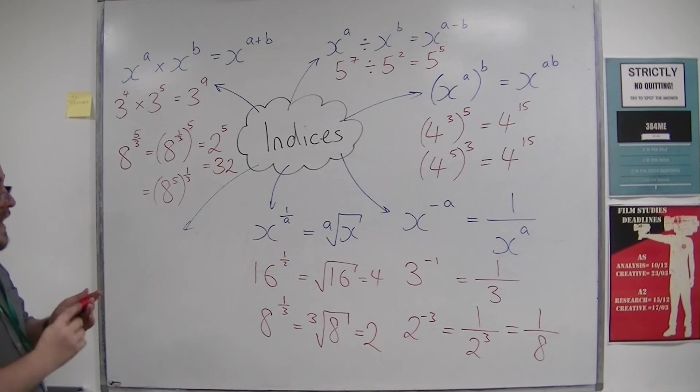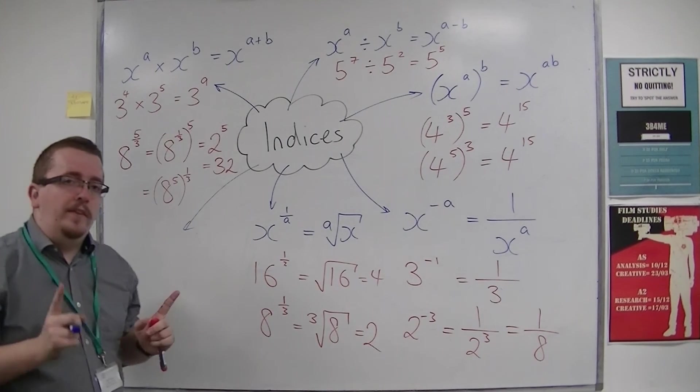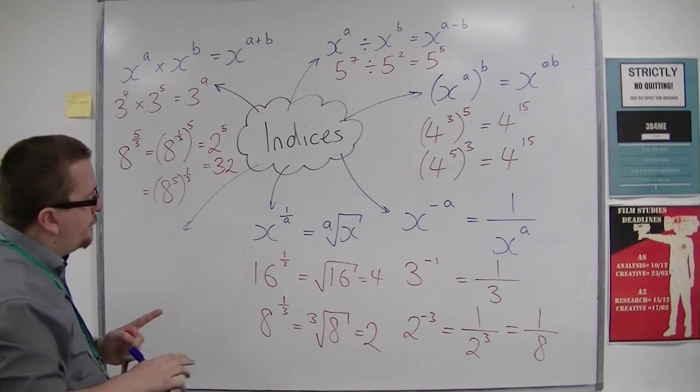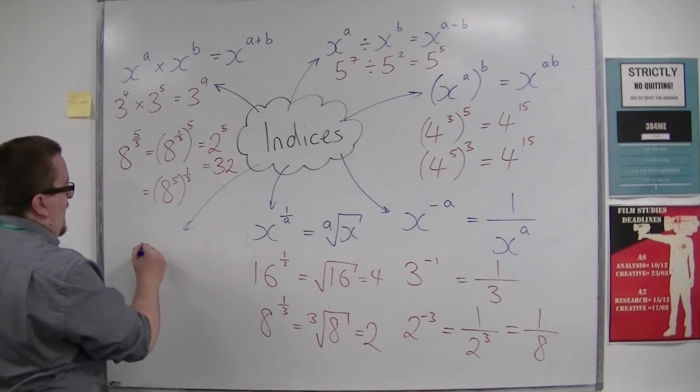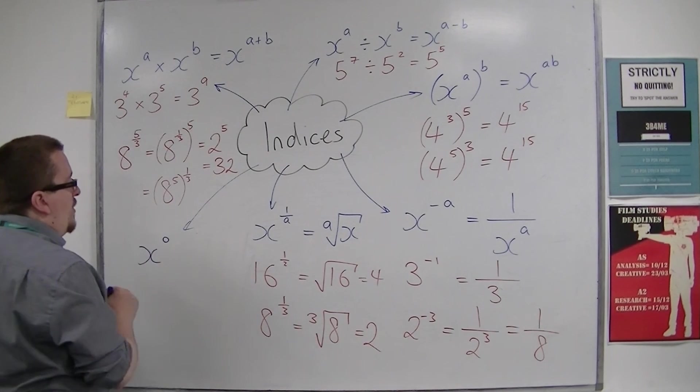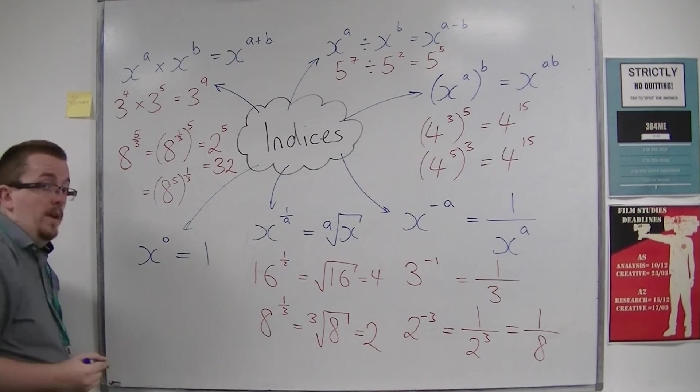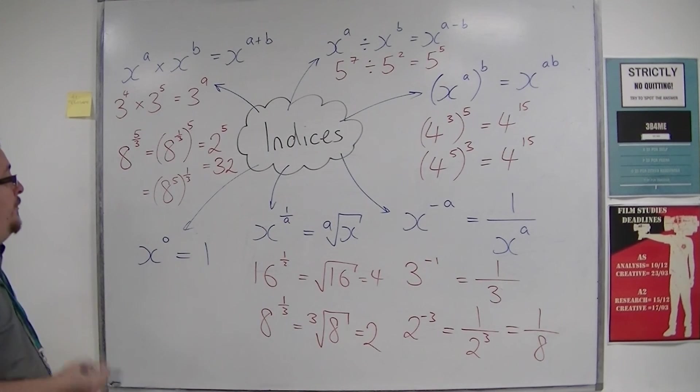The only thing that's left really about indices to make sure you know is that anything to the power of 0 is 1. x to the power of 0 is 1.